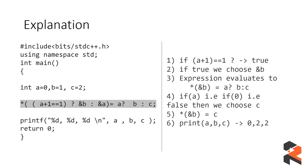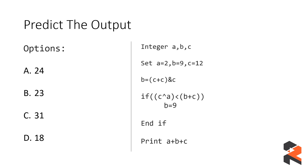Now let's look at another problem. We again have to predict the output. In this case we have three integers a, b, and c, and a particular pseudocode written here. This format is one way pseudocode may be presented — sometimes it's written this way, other times a part of a program is given directly. We have three variables a, b, and c with values assigned, and then some operations are performed: b = (c + c) & c.